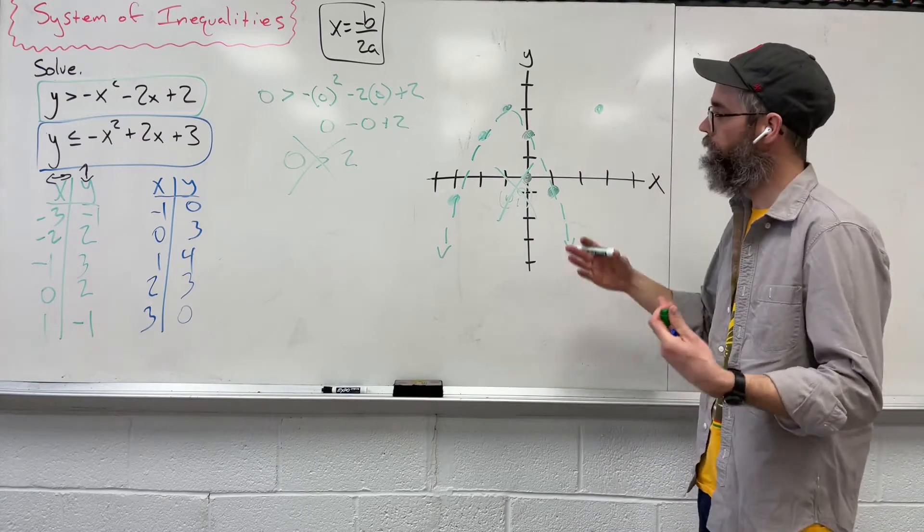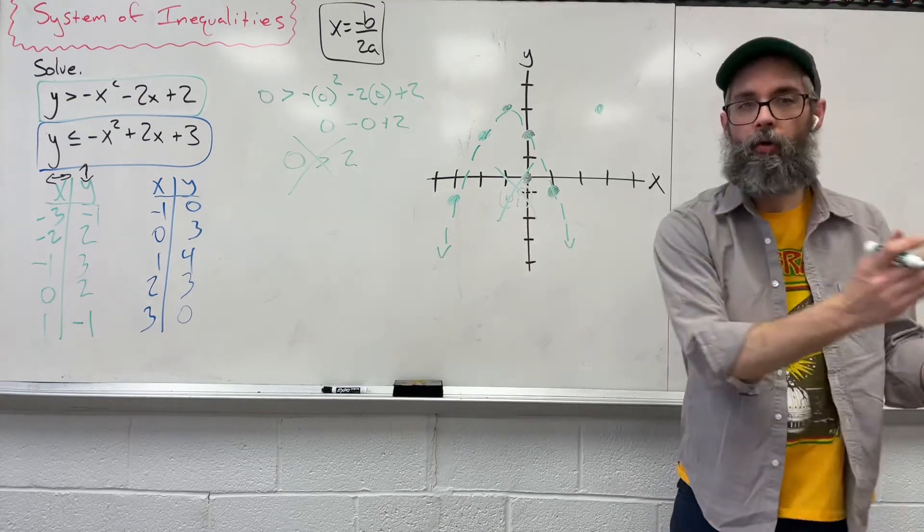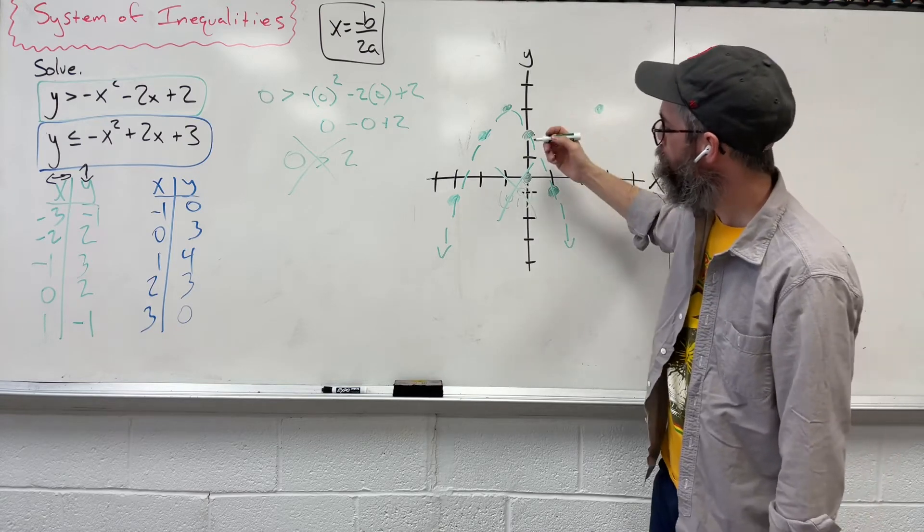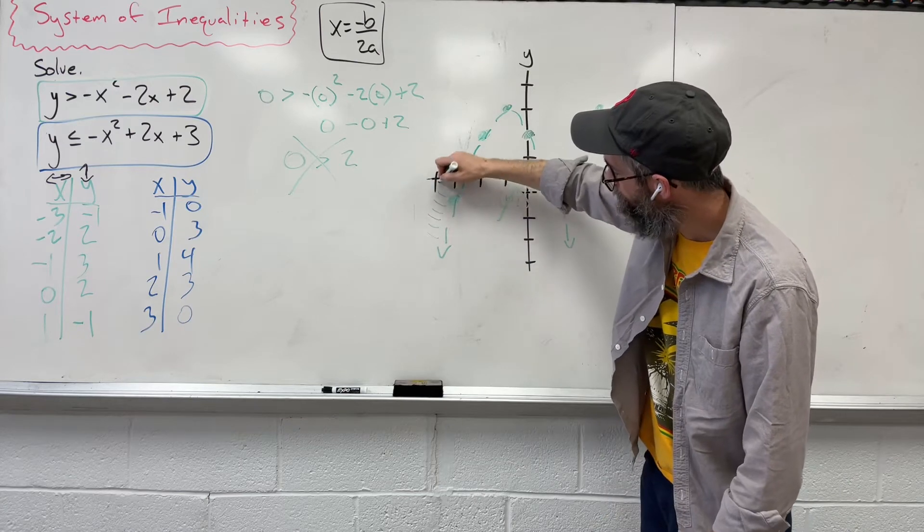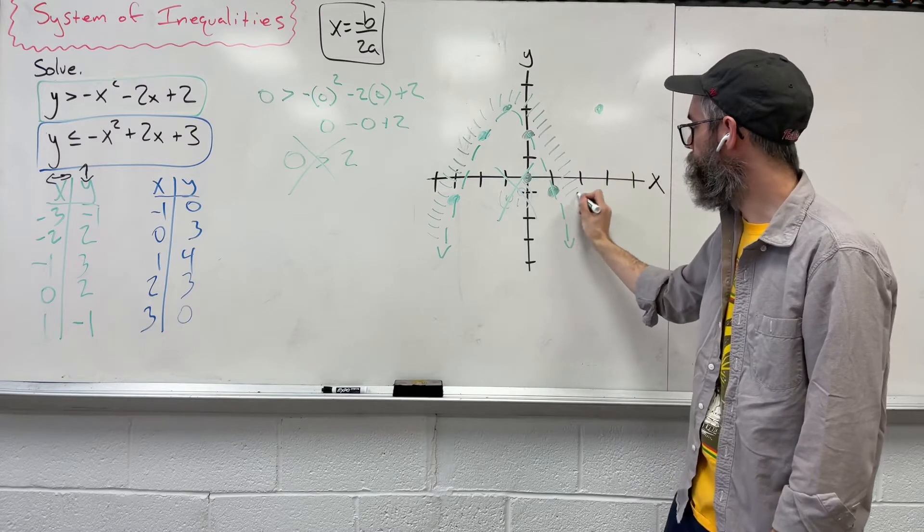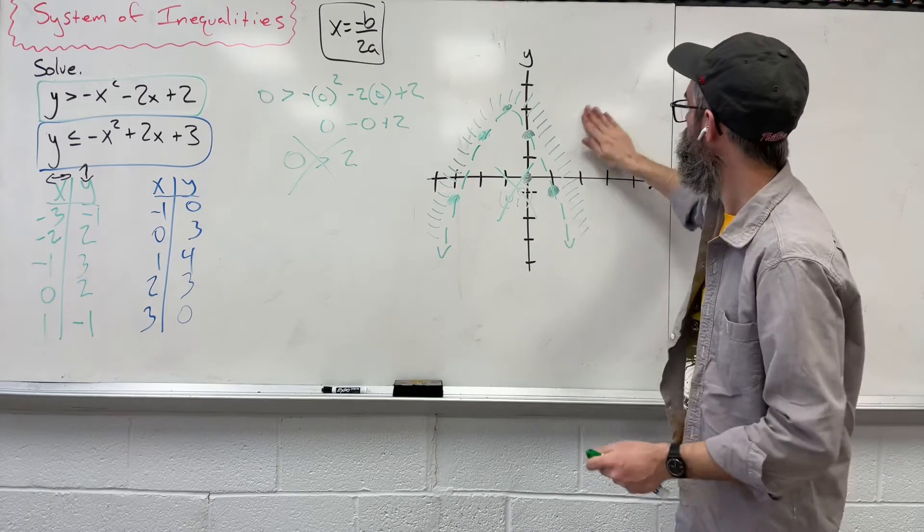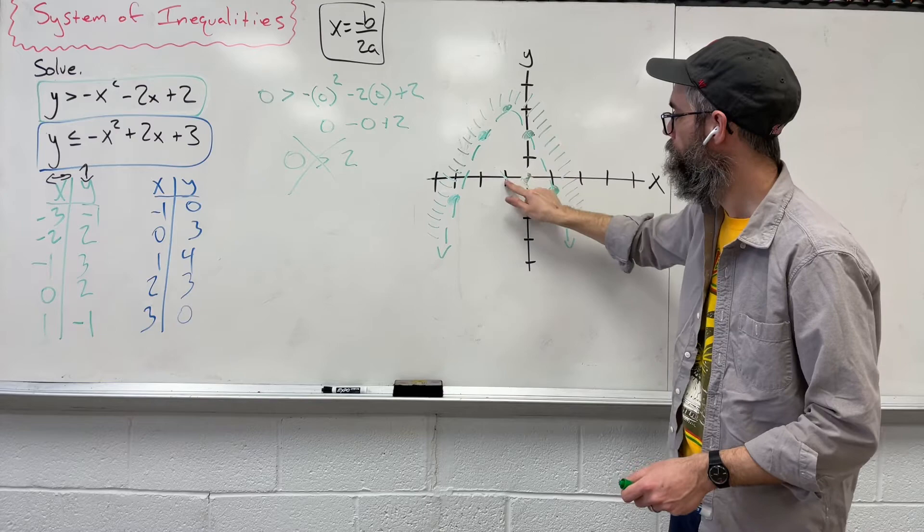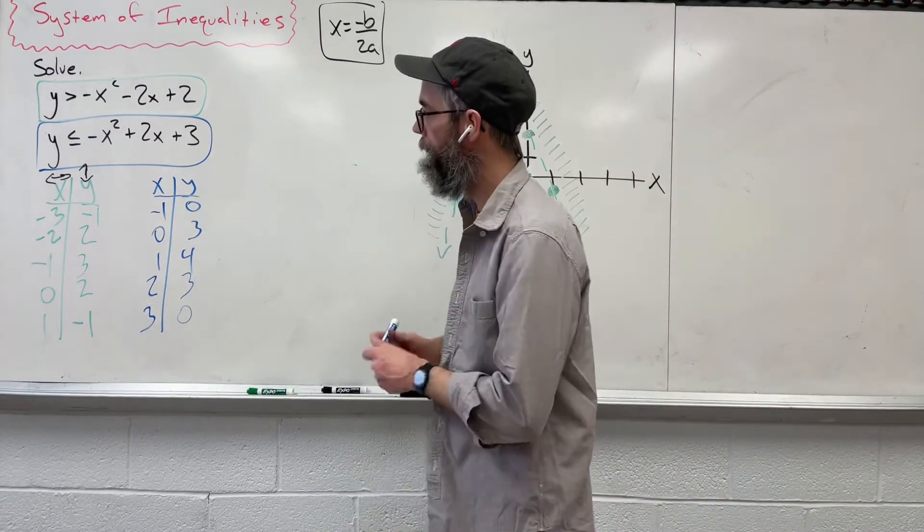So that means this coordinate is false. When you're dealing with shading, it's either going to be inside, outside, this side, that side, over here, over there. If it's not in here, we're going to shade outside. So what I'm going to do before I shade everything, I'm just going to kind of give myself an idea of where I'm shading. I'm going on the outside over here. So when we put the other graph in, we can kind of figure out an easier point.